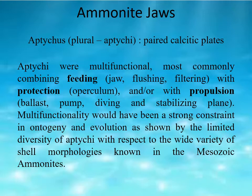Ammonites are predators — they chase and hunt their prey — so they have a well-developed jaw system by which they can chew or feed on prey. It was previously thought that the aperture was covered by a single plate or a pair of calcitic plates known as aptychus (plural: aptychi). Later, when these calcareous plates were found directly associated with ammonite fossils, particularly with the body chamber, research on their functions revealed that rather than serving as a protection door,